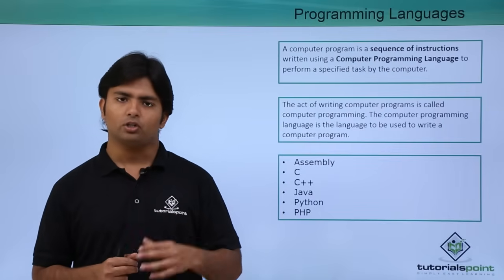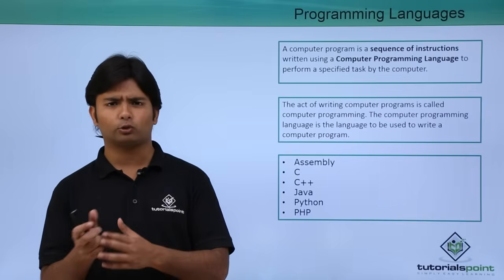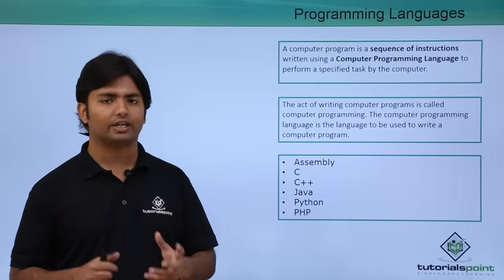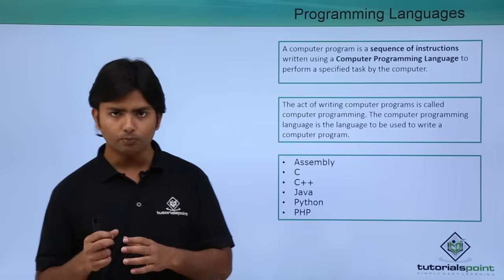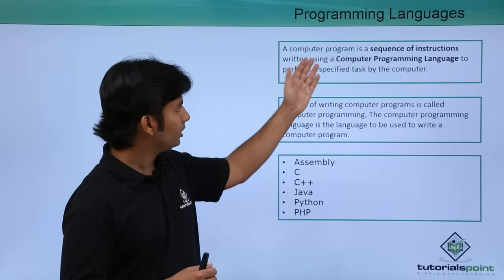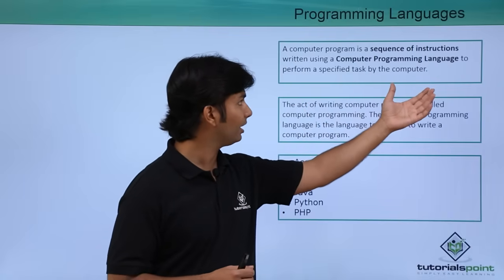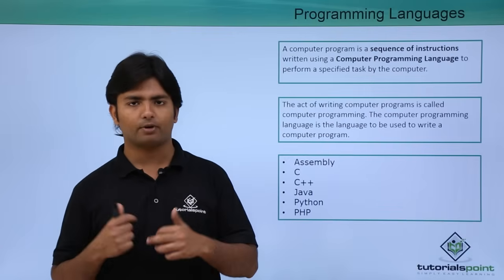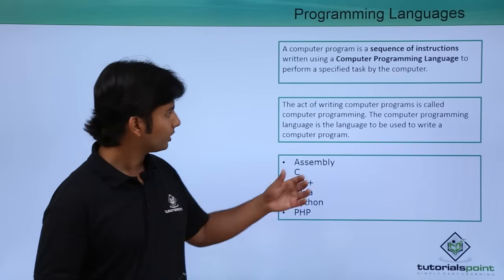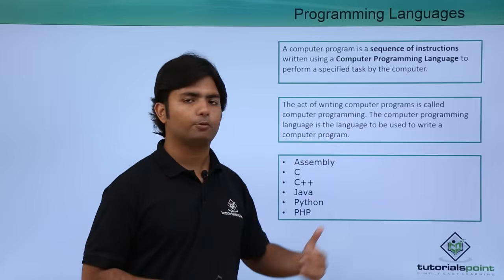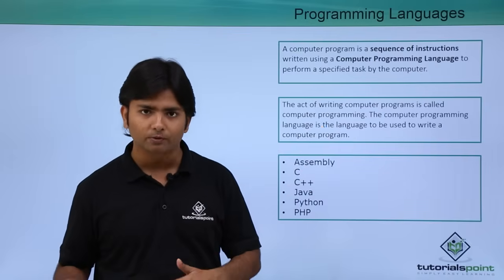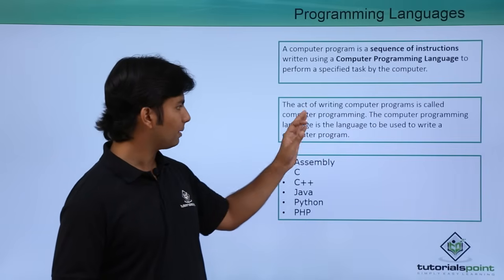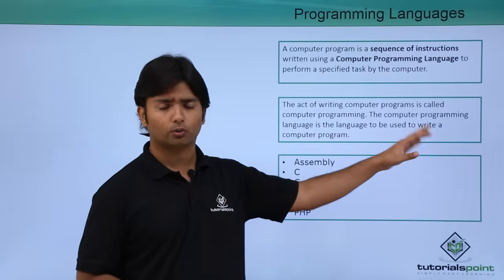While using a programming language, you will be offered some syntax that you can also relate to the grammar of any particular language. Using appropriate grammar, you can use any language in order to make communication. As you can see, a computer program is a sequence of instructions written using a computer programming language to perform specific tasks by the computer. Whenever you are writing a program, you are giving some instructions to the machine, and the act of writing a program is called computer programming — you can also relate it with coding.